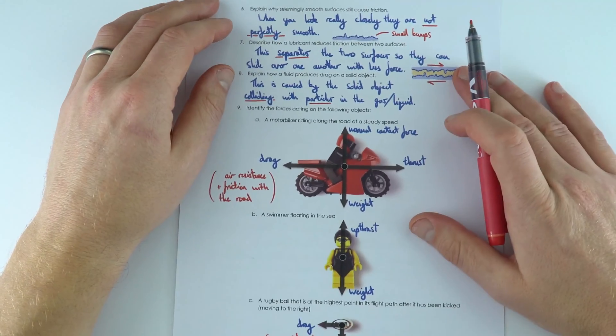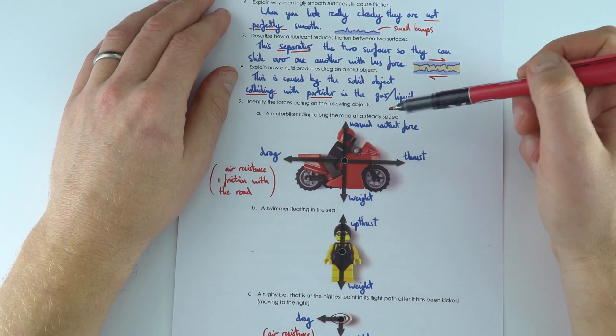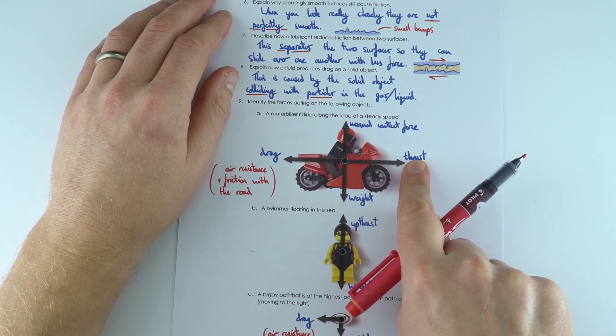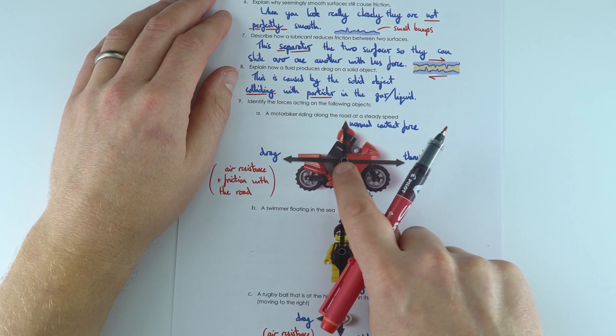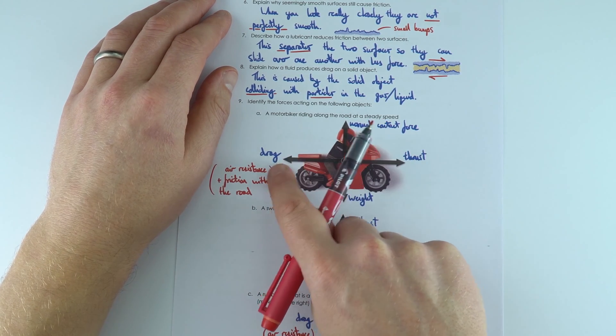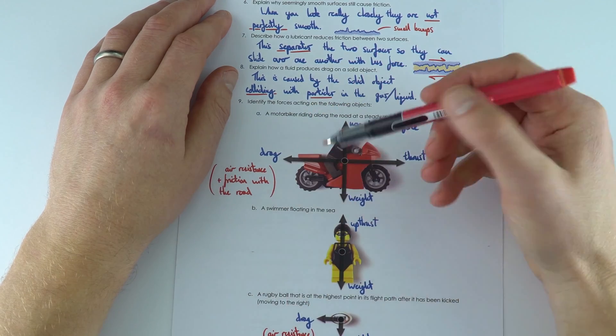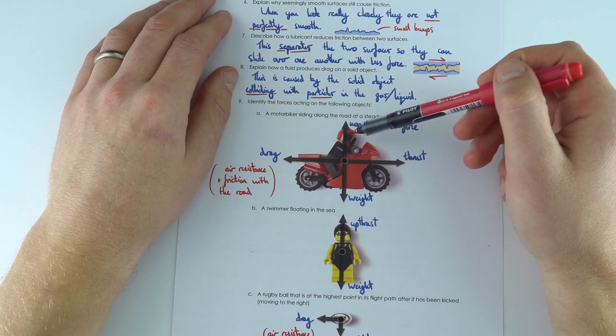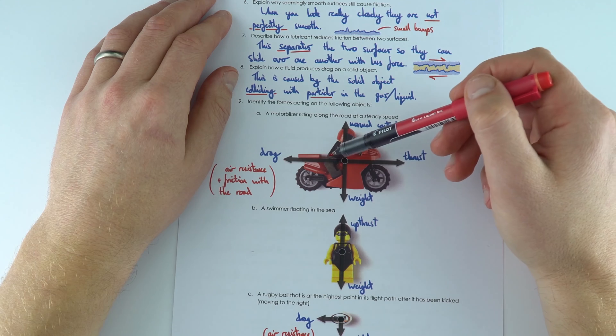We've got some forces you can identify. Here we've got a motorbike at a steady speed. There's a thrust force provided by the engine, but there's also a drag force. This drag includes the friction between the tires and the road and the air resistance of the rider and motorbike going through the air.